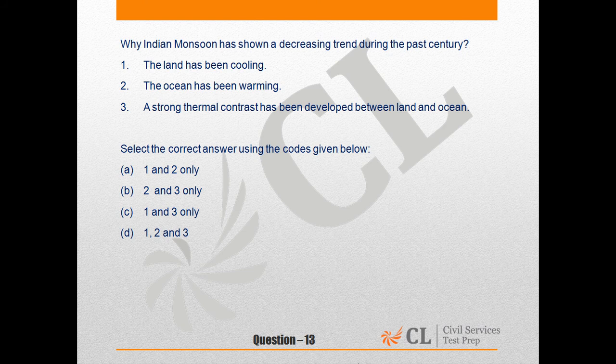Question number 13. This question is from the geography section. The question asks: why has the Indian monsoon shown a decreasing trend during the past century? With this regard, we have to consider three statements and find out the correct one.